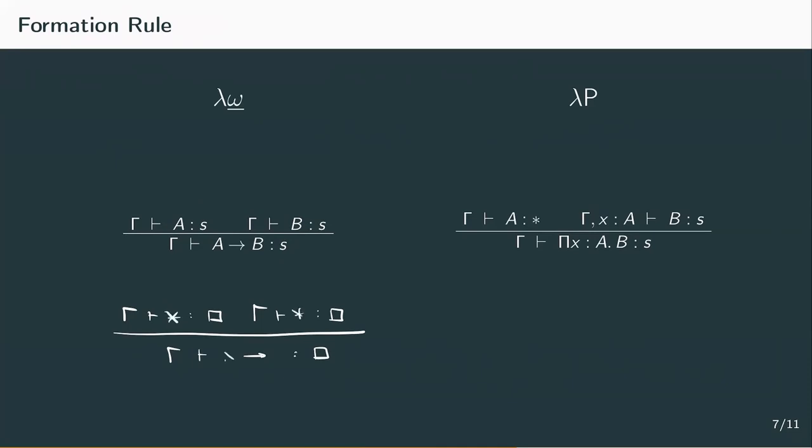This star to star is the kind of a constructor, of a proper constructor. So its inhabitant will be a type depending on a type, which is not allowed in lambda P. So we need to forbid A from being a kind. It can only be a type.